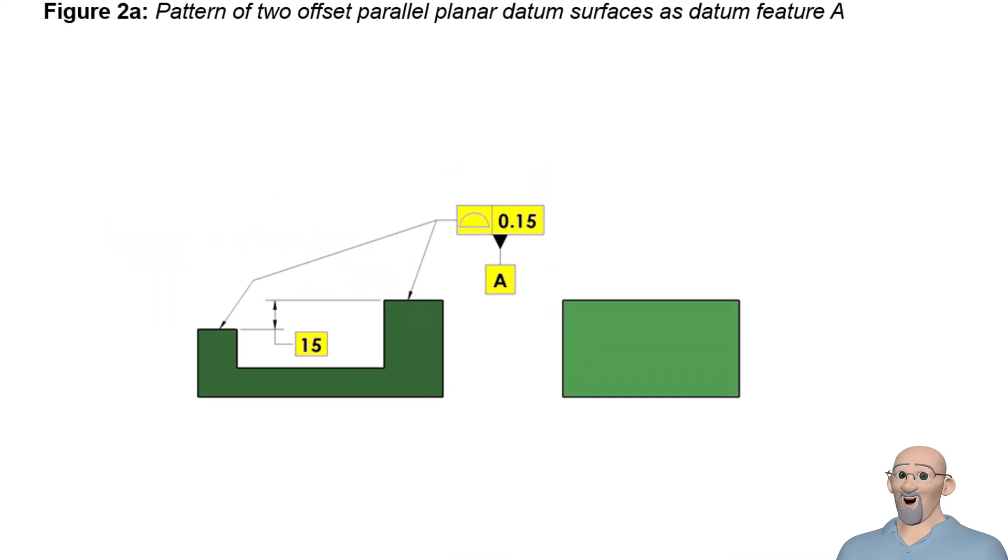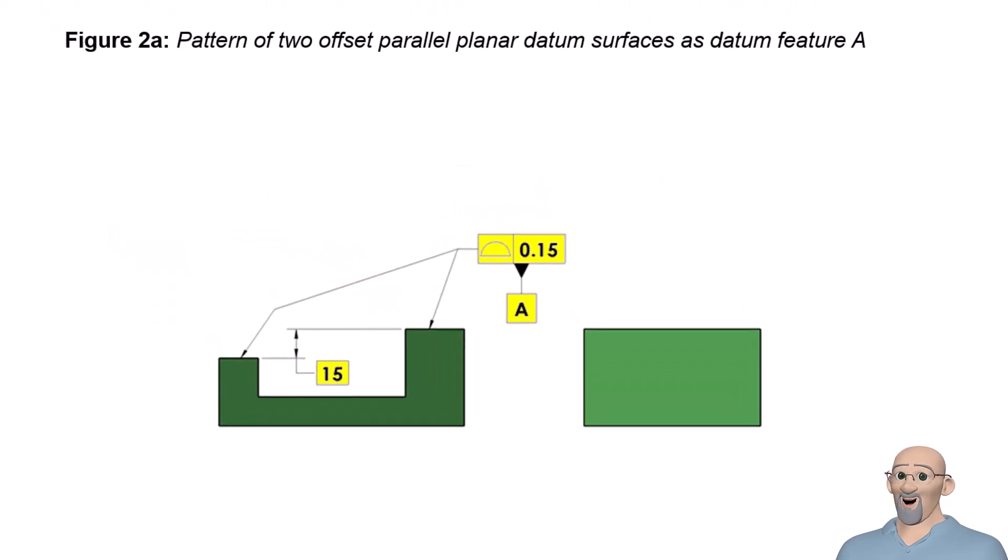Next, let's look at an example of a pattern of two offset parallel planar surfaces as a primary datum feature. This part shows an example of using a pattern of two parallel offset planar surfaces as datum feature A. We have used profile of a surface to control the form and relative orientation and location of the two planar surfaces.